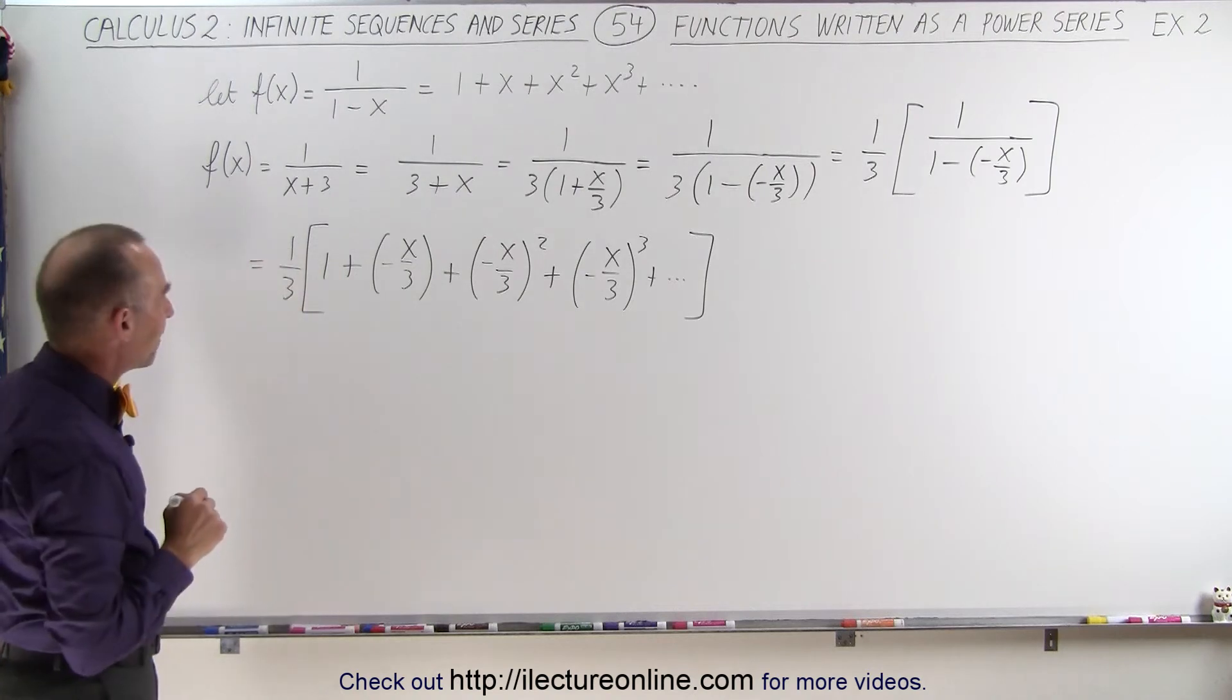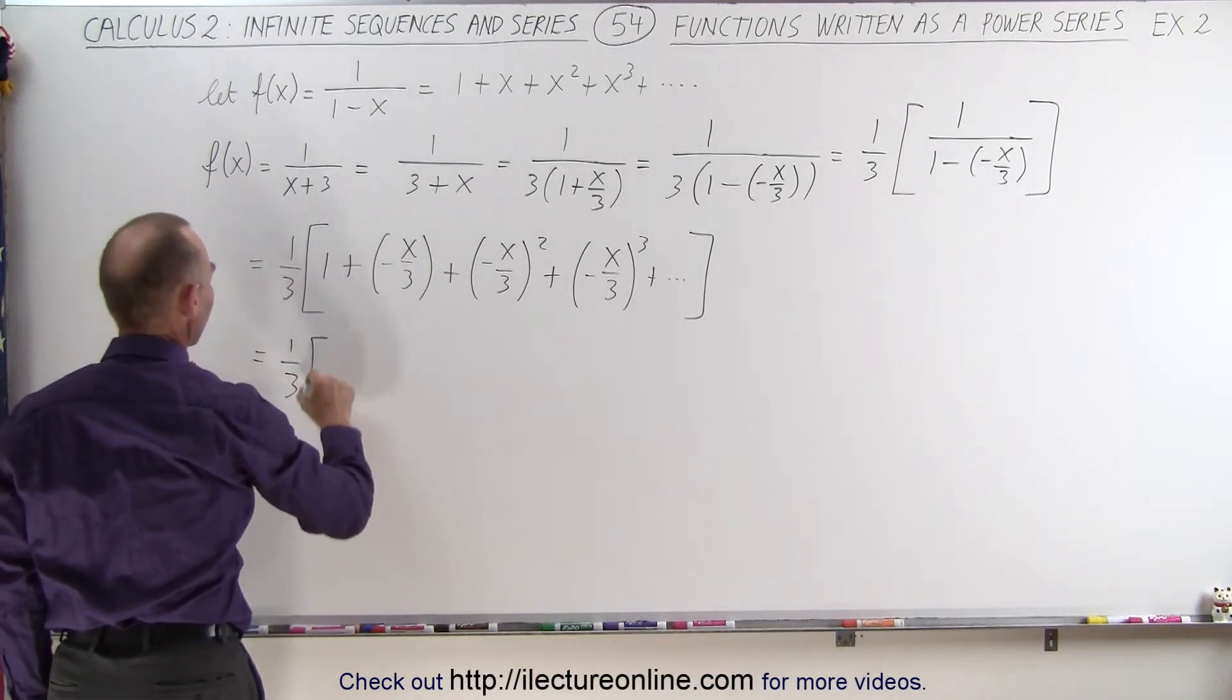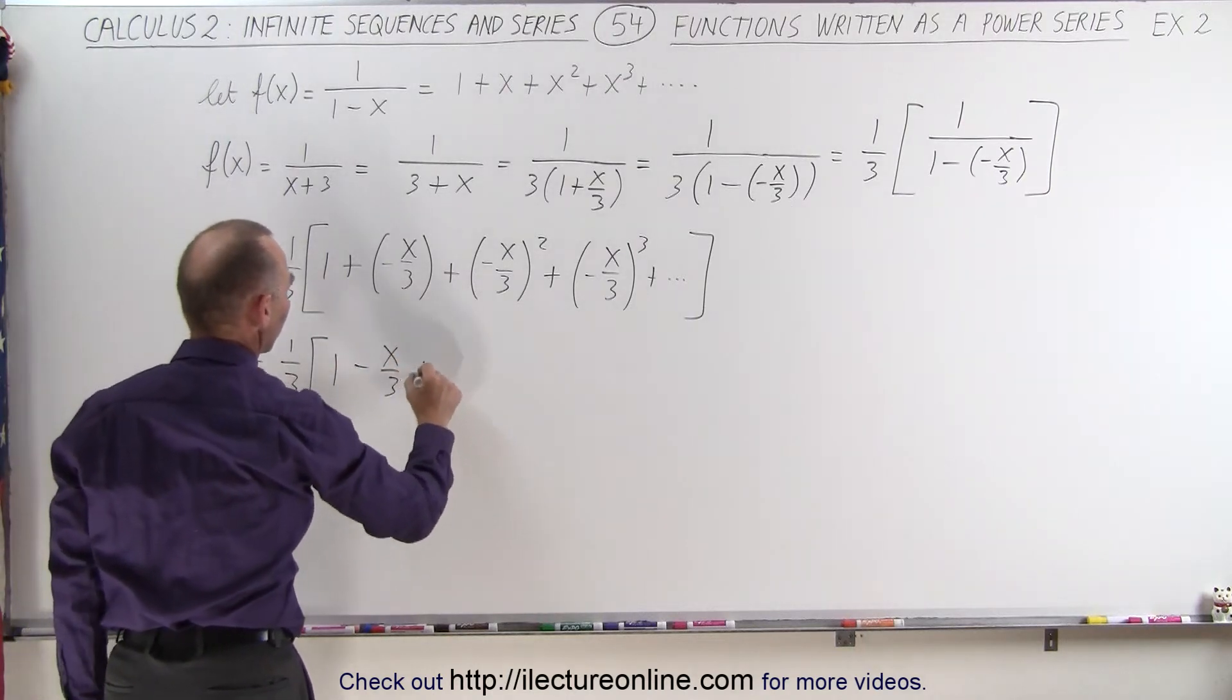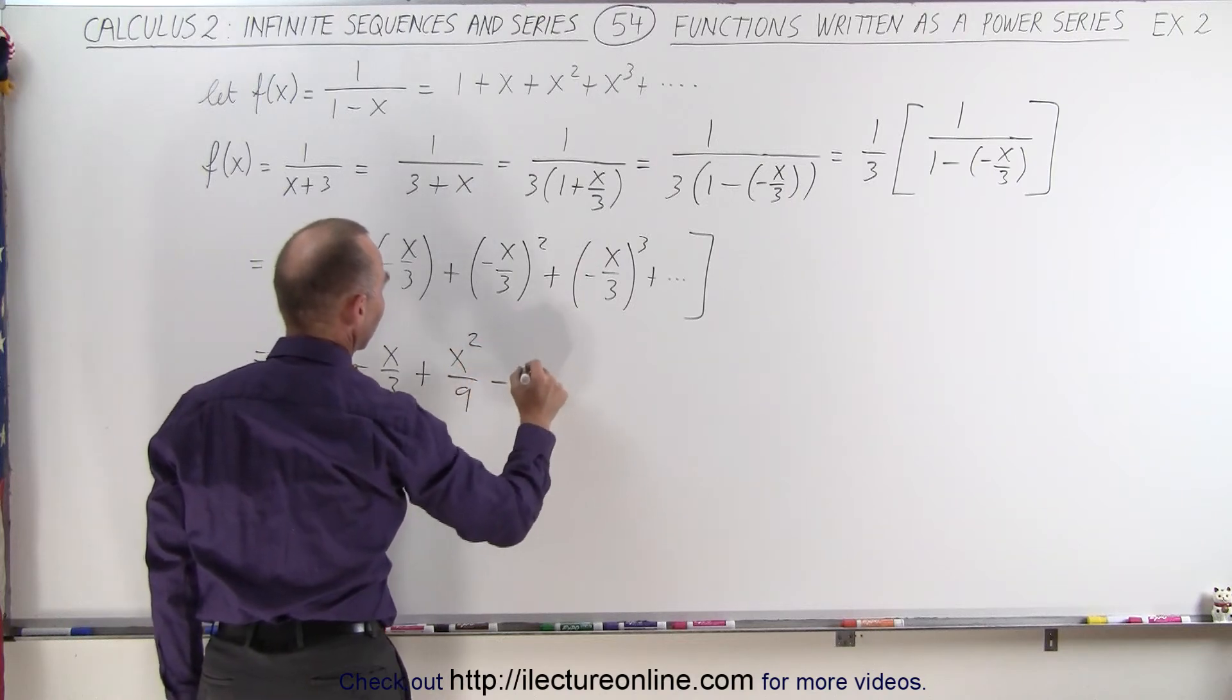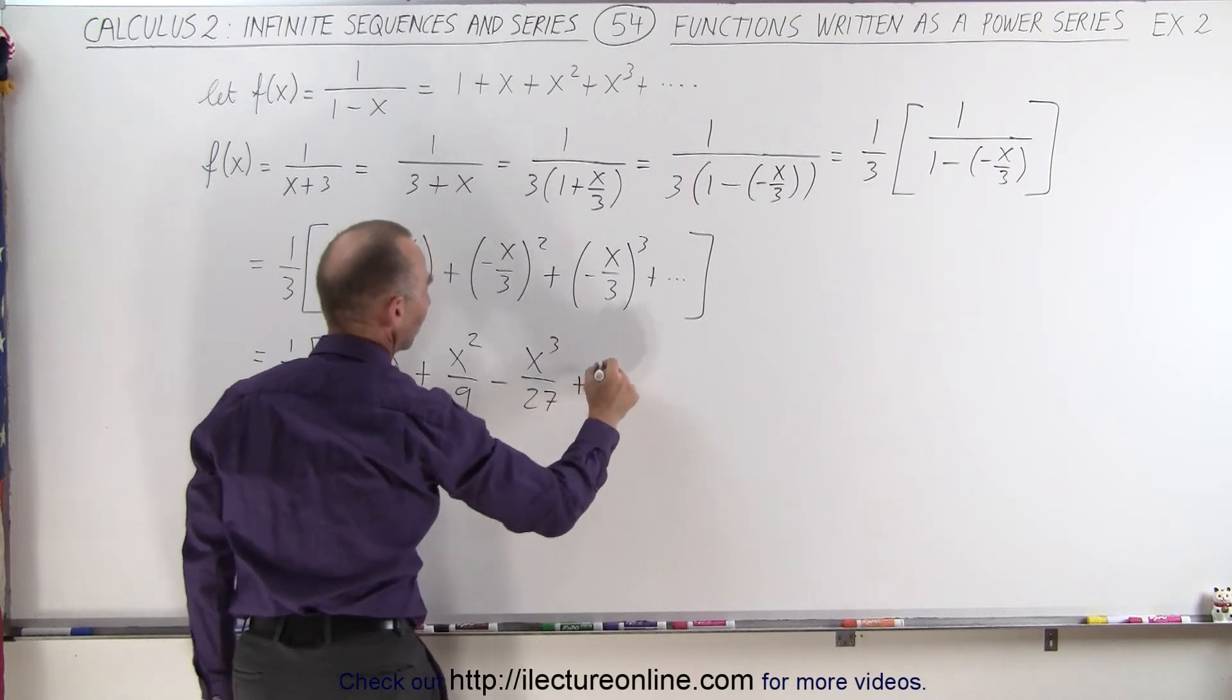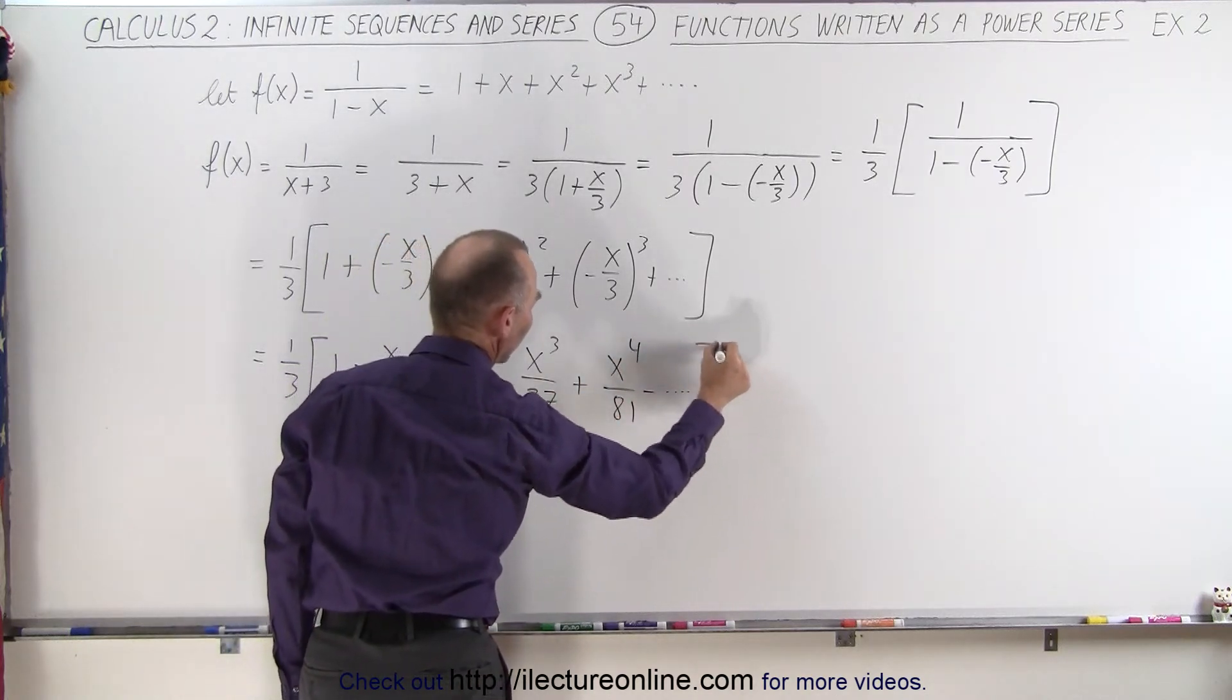Let's see what that looks like now. So this is equal to 1 over 3 times 1 minus x over 3, plus x squared over 9, minus x cubed over 27, plus x to the fourth over 81, minus, and so forth.